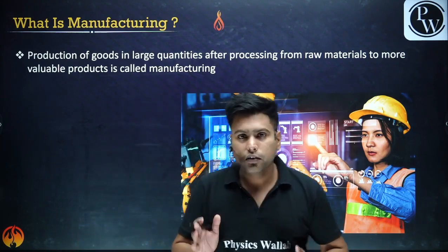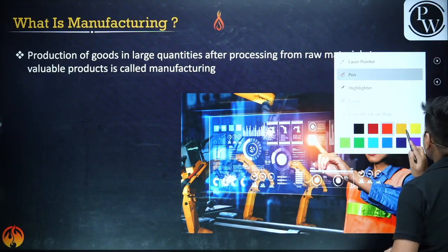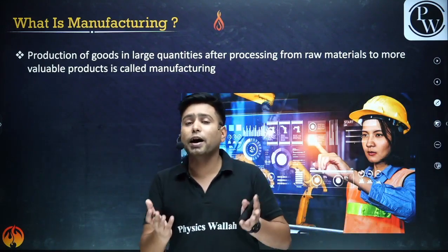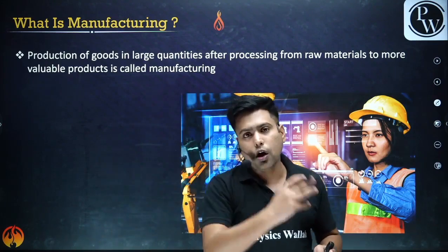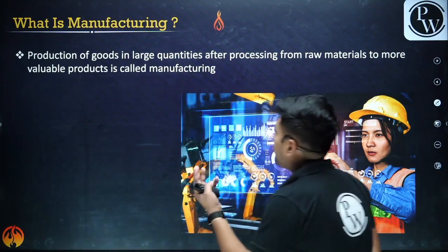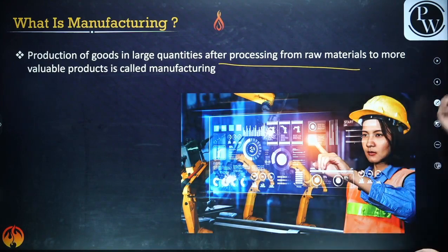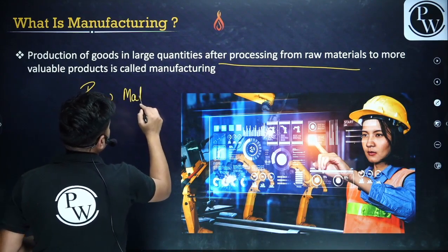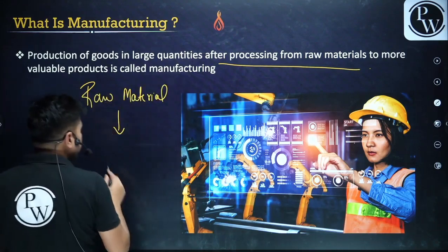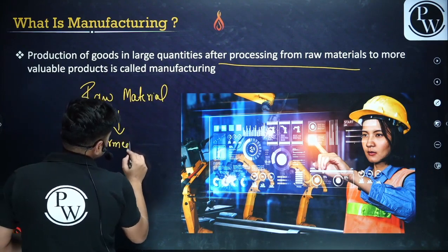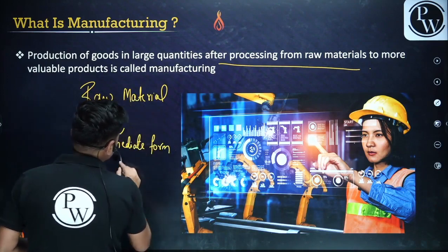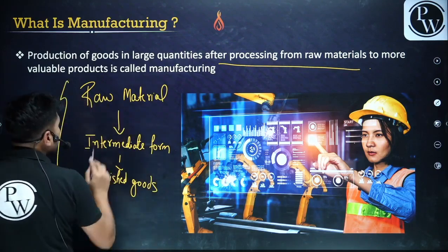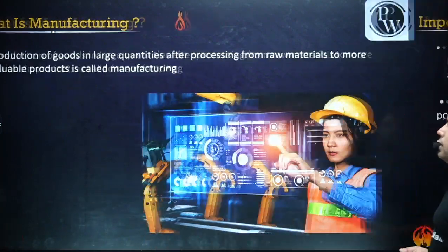Manufacturing in very simple terms means converting a raw material into a processed or finished product that can be used by a consumer. This entire process of conversion — from raw material to intermediate form to finished goods — is called manufacturing. Production of goods in large quantities after processing raw materials into more valuable products is what manufacturing is.